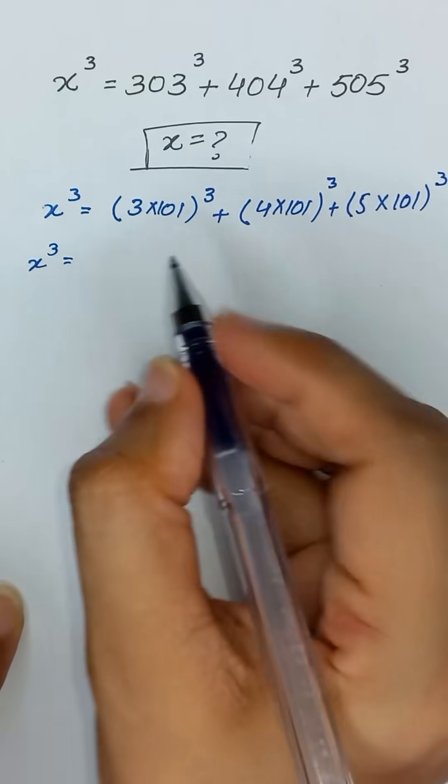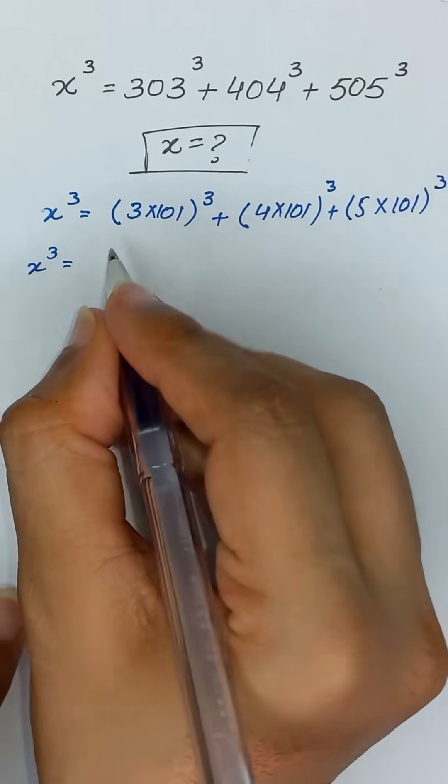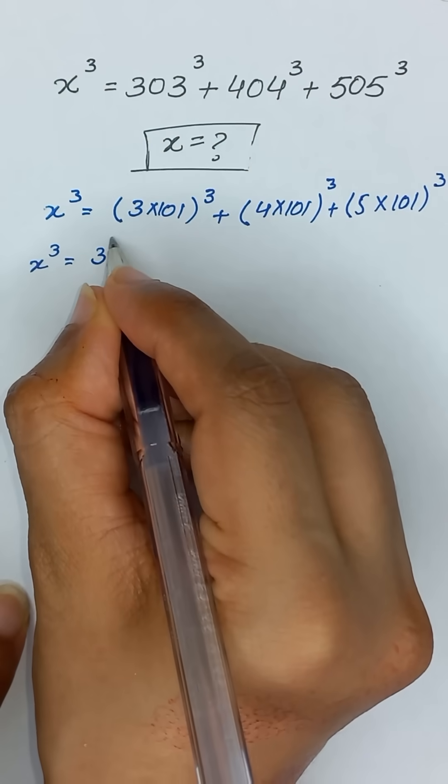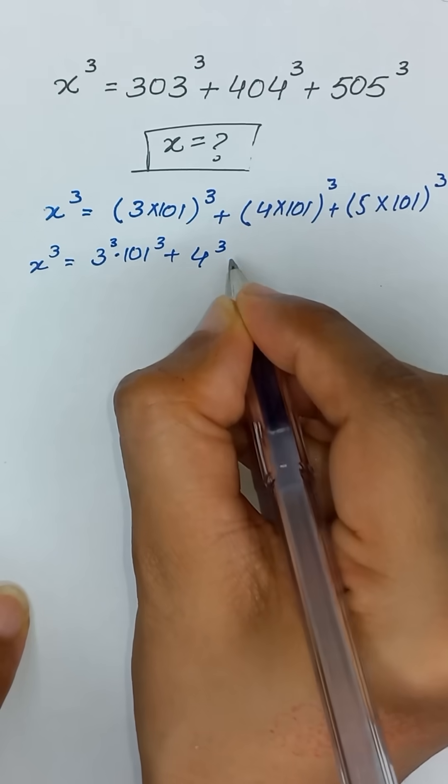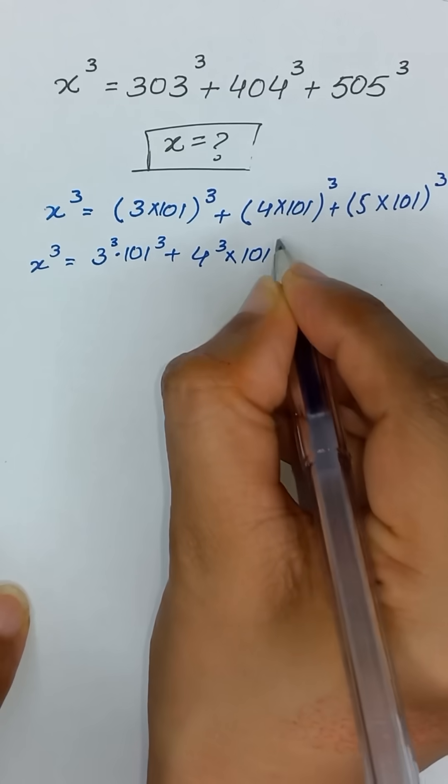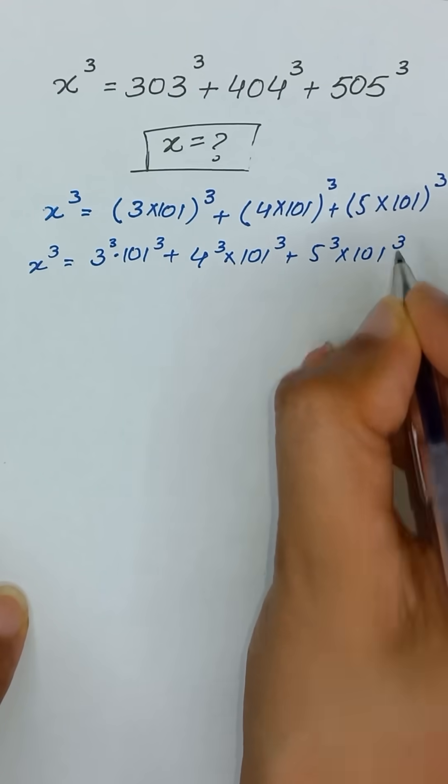Now x cube will be equal to, as we know that a times b whole power m can be written as a to the power m, b to the power m. So it will become 3 to the power 3 times 101 cube, similarly 4 cube times 101 cube, 5 cube times 101 cube.